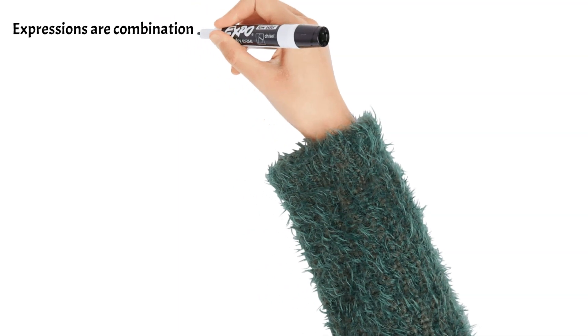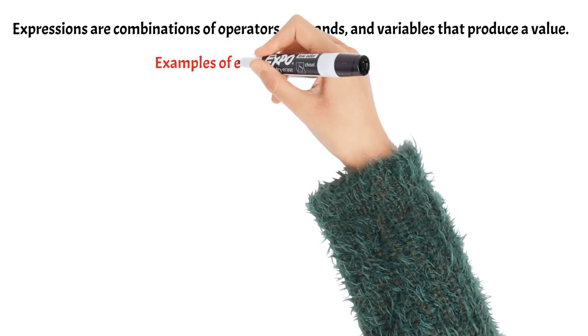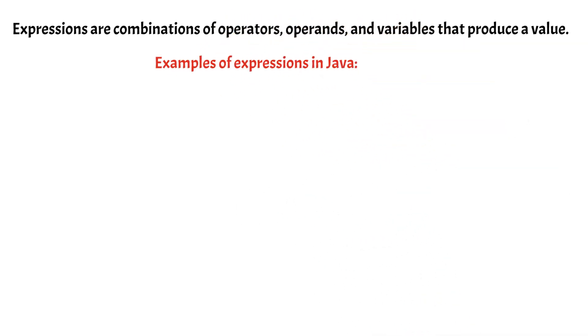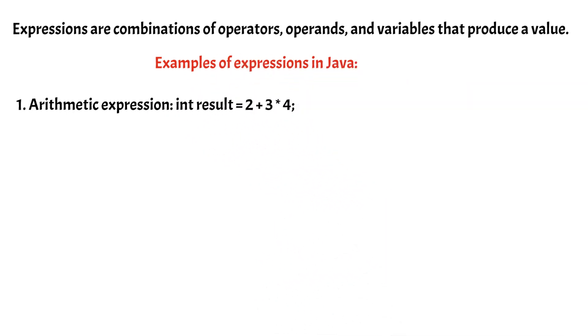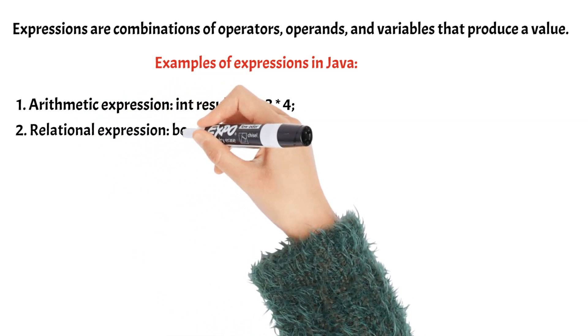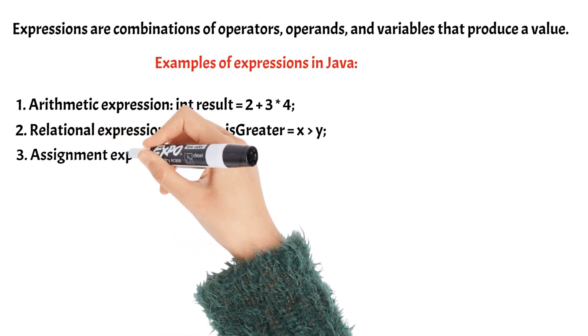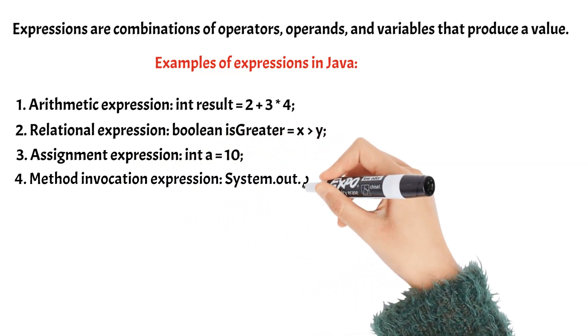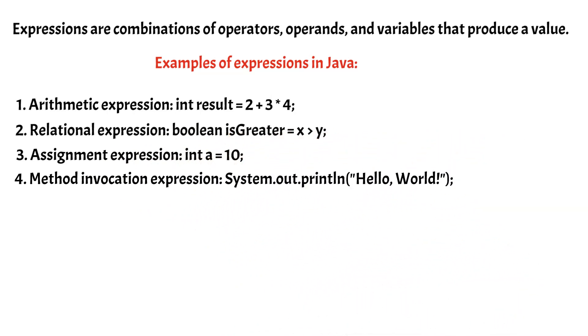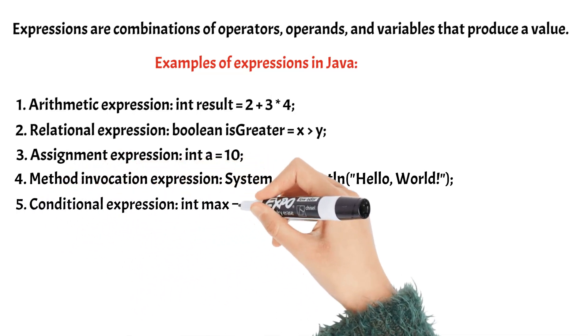Expressions are combinations of operators, operands, and variables that produce a value. Examples of expressions in Java: 1. Arithmetic expression int result = 2 + 3 * 4. 2. Relational expression boolean isGreater = x > y. 3. Assignment expression int x = 10. 4. Method invocation expression System.out.println("hello world"). 5. Conditional expression int max = x > y ? x : y.